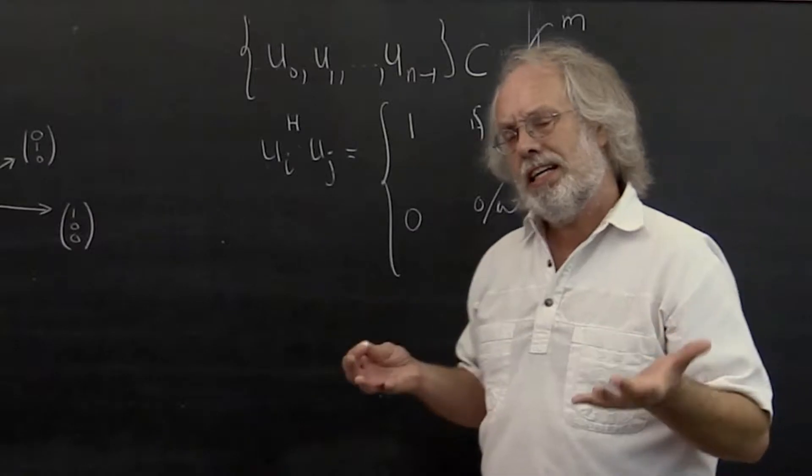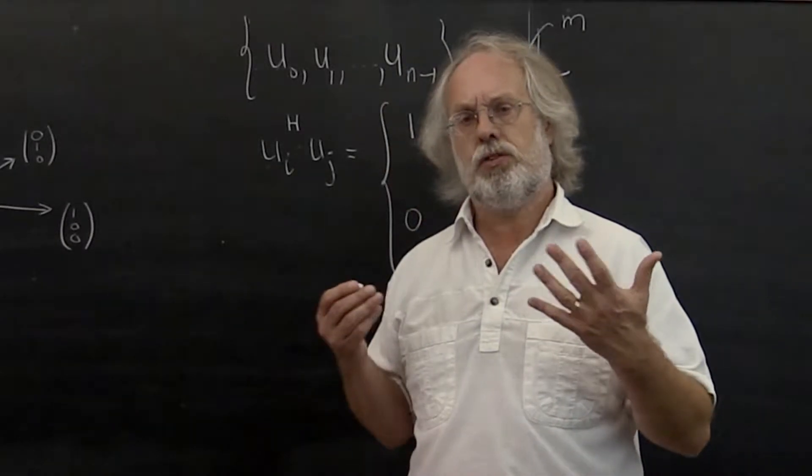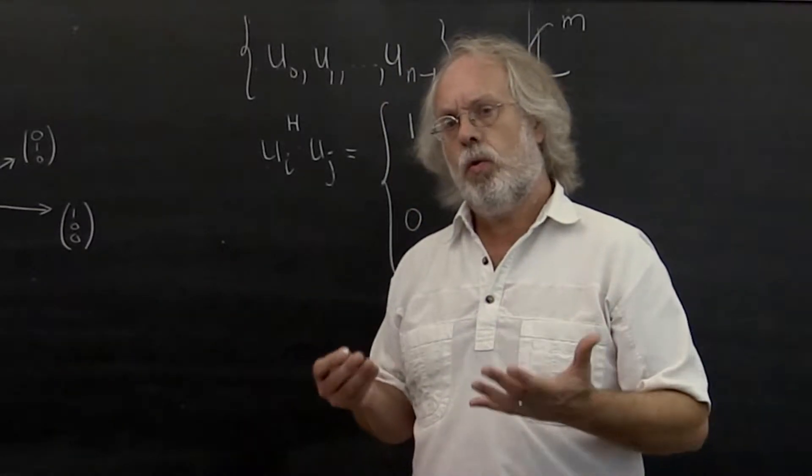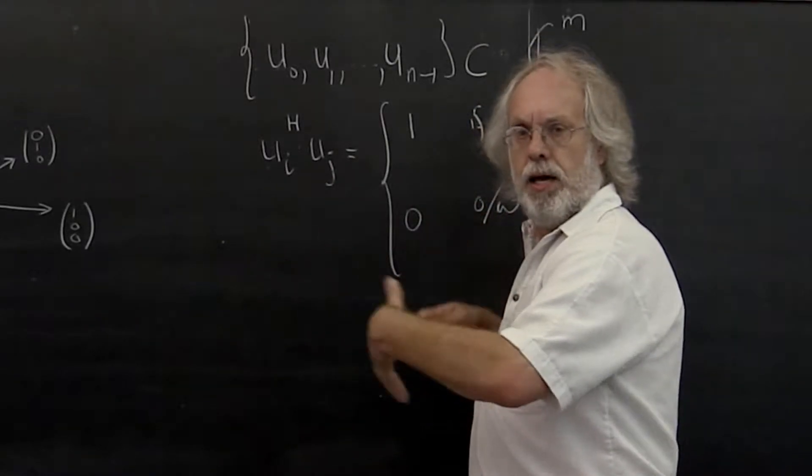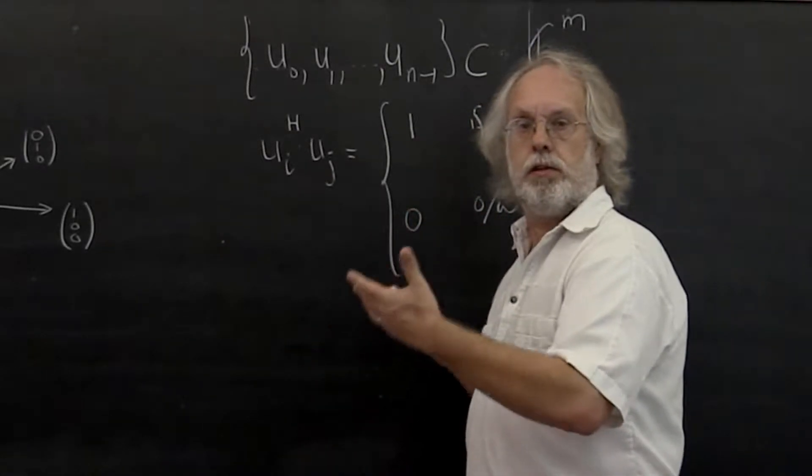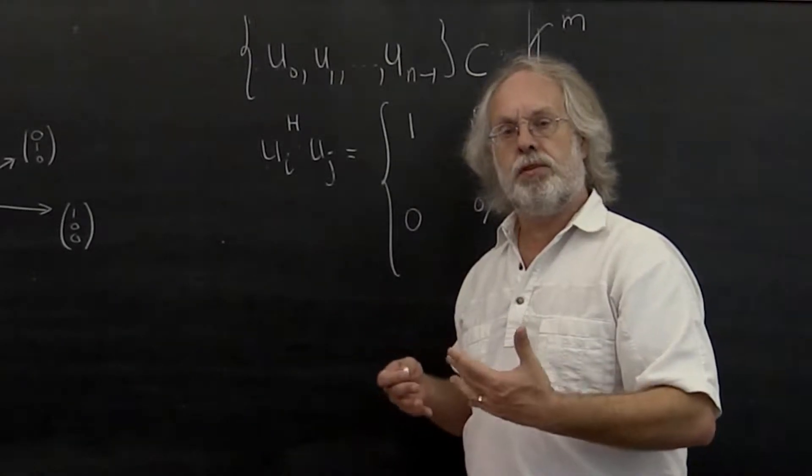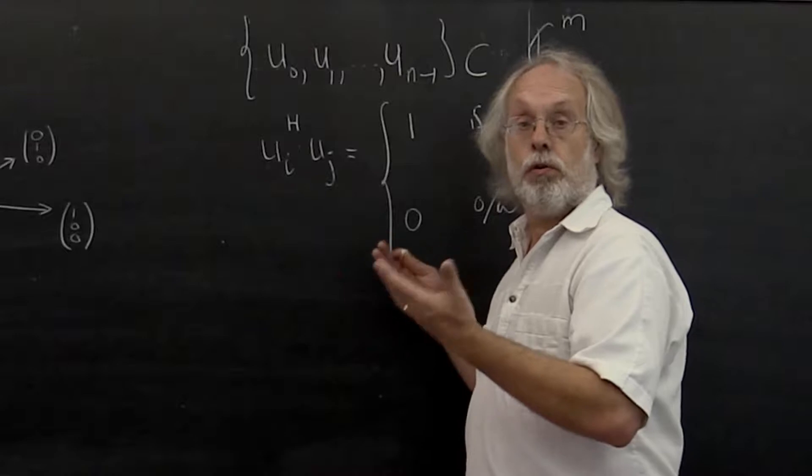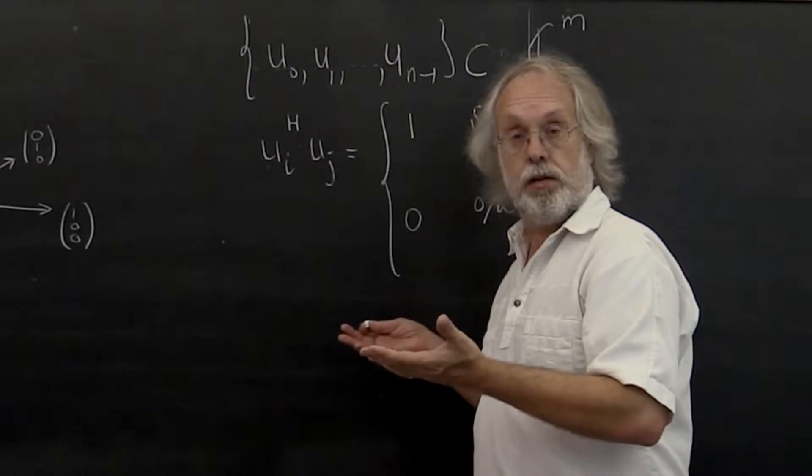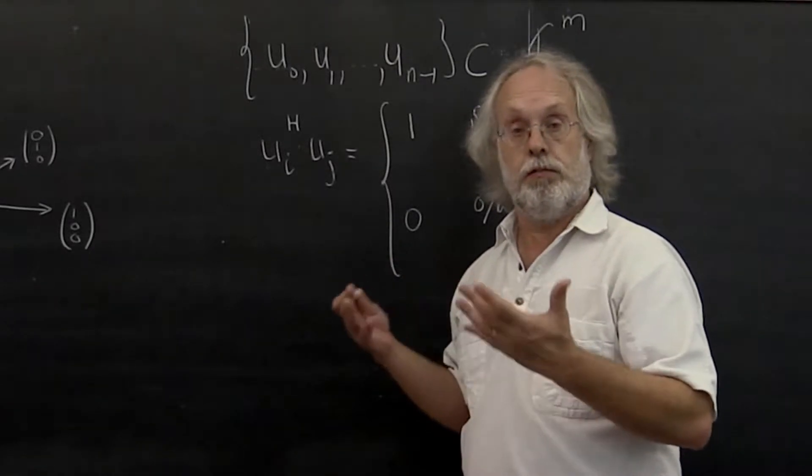Now what do we like to do in this course? In this course, we often like to take vectors and make them into the columns of a matrix. Let's have a look what happens if you take mutually orthonormal vectors and make them the columns of a matrix.